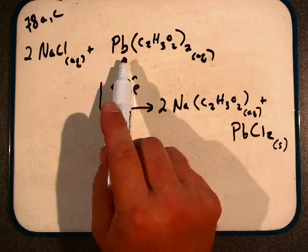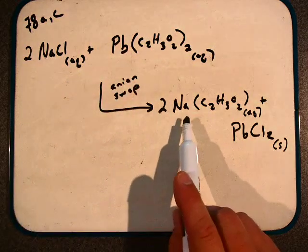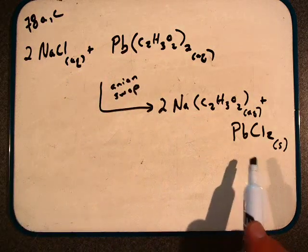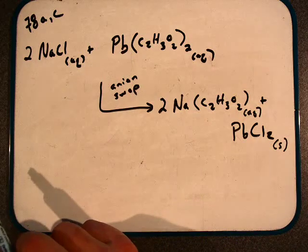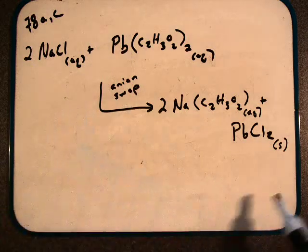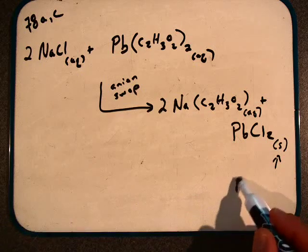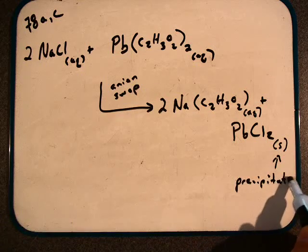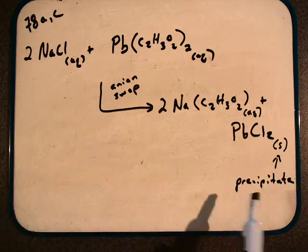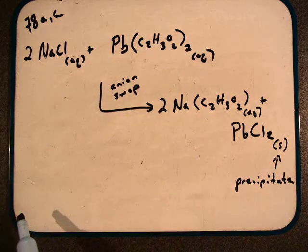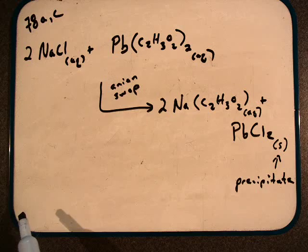Two sodium chlorides and one lead acetate react to form two sodium acetates and one lead chloride. We have a reaction because we have an actual precipitate. Since we have a precipitate, this would be our balanced chemical reaction for that process.